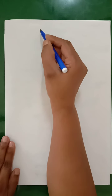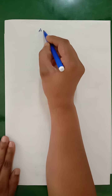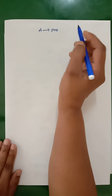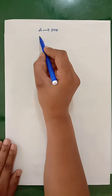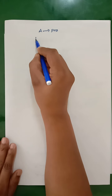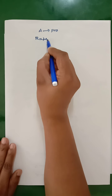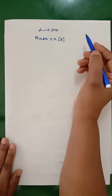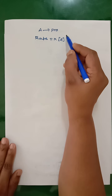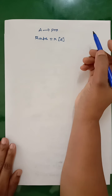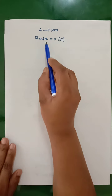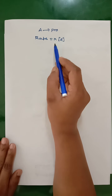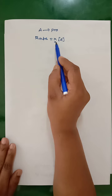Now we will study the characteristics of rate constant. To study the characteristics of rate constant, we will consider one general reaction: A gives product. For this reaction, according to the law of mass action, the rate expression can be written as: rate is equal to k into concentration of A raised to the power x, where x is called the order of the reaction, and k is the rate constant.